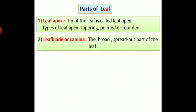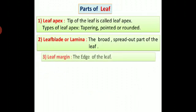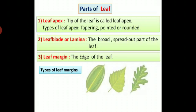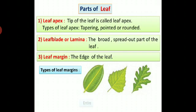Leaf blade or lamina: the broad, spread out part of the leaf is called leaf blade or lamina. Leaf margin: the edge of the leaf is known as leaf margin. We can see different types of leaf margins in different types of plants. Different types of leaf margins are entire, dented, or lobed.